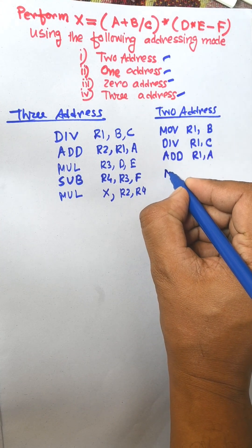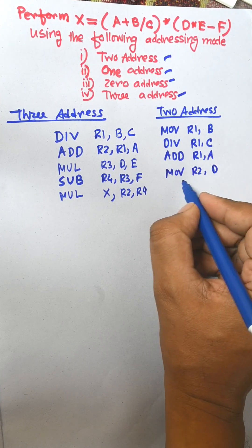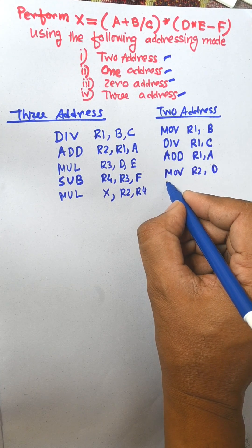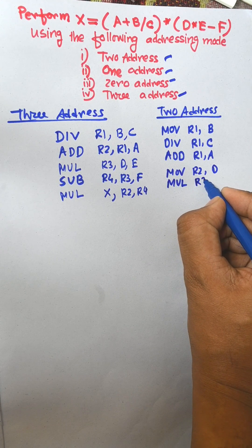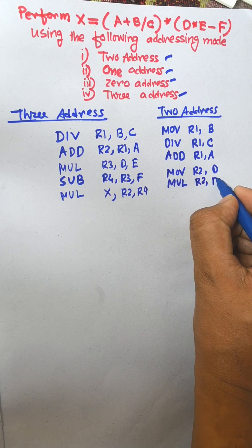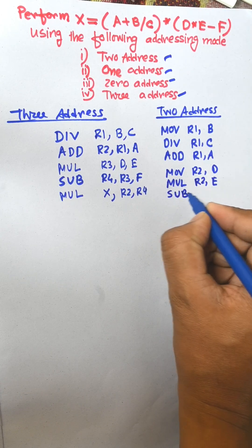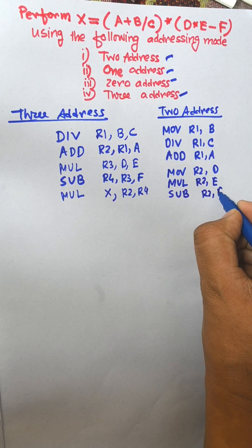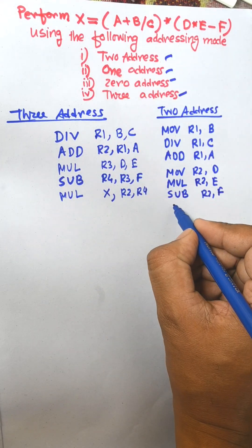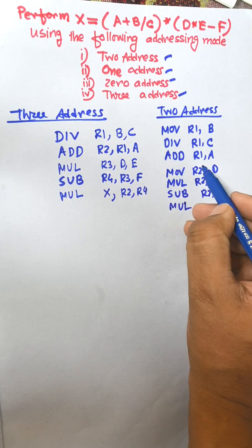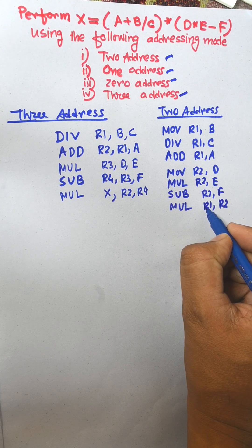Now the next operation is move: MOV R2, D — D is transferred to R2. Then multiply R2, E — D and E are multiplied together and the result is transferred to R2. Then SUB R2, F. Finally, multiply R1 and R2 — the results are multiplied and the result is transferred to R1.